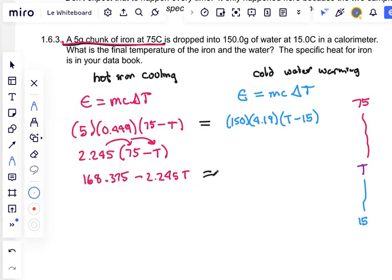We still have our equals and on the right very similar stuff happens. We can do 150 times 4.19, which is 628.5 times T minus 15. Just double checking that number, I didn't expect it to come out with only one decimal place. Yep, we're okay.